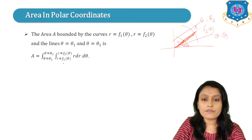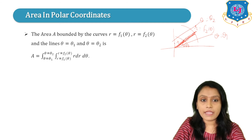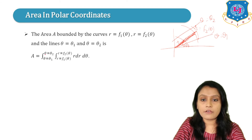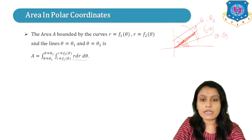The elementary radius vector enters the region from R = F1(θ) and ends at R = F2(θ), so the limits of R are F1(θ) to F2(θ). The limits of θ are θ₁ to θ₂. In place of dX dY, we now have R dR dθ, where the R is for the Jacobian.